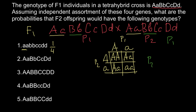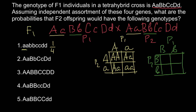And when we cross capital B small b with capital B small b, the same results can be seen and the same frequencies apply. The chance of small b small b is also one quarter. Similarly, for small c small c, this is going to be the same probability — one quarter.